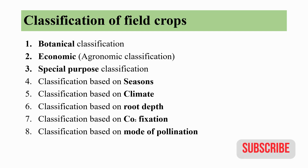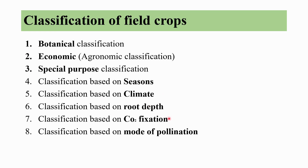We will discuss how field crops are classified and what are the types of classifications. Different types of classifications include botanical classification, economical classification, special purpose classification, and classification based on seasons, climate, root depth, carbon dioxide fixation, and mode of pollination.